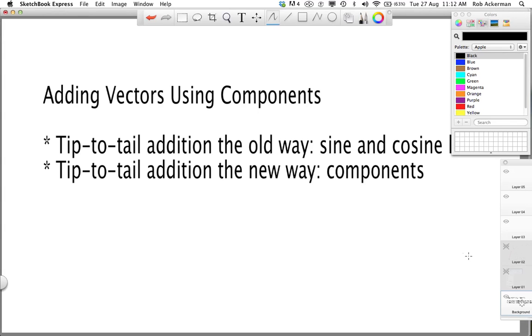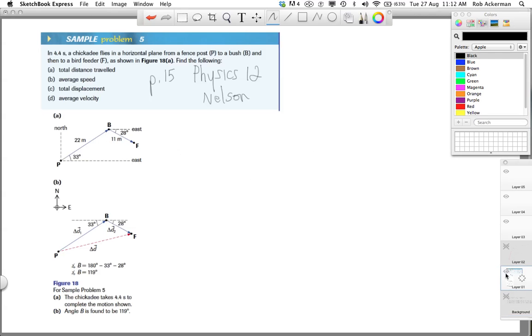The first thing we're going to do is, if you're following along in the textbook, I'm going to ask you to turn to page 15, sample problem 5. And for those of you who don't have the textbook, I've cut and pasted a little bit of the problem so you can get an idea of what we're talking about here. In the question, they say that a bird flies in a horizontal plane from point P to B and then F, and that's as shown in figure A right over here. So you see the bird going 22 meters in a direction of 33 degrees north of east, and then turning and going 11 meters 28 degrees south of east.